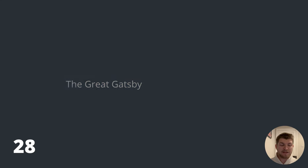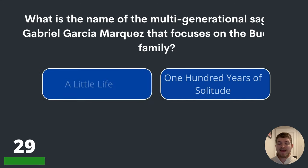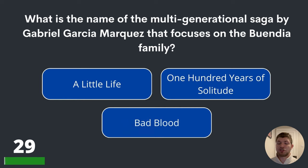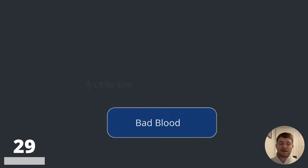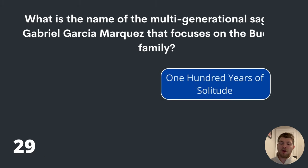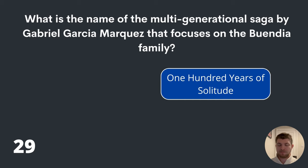Question twenty-nine. What is the name of the multi-generational saga by Gabriel Garcia Marquez that focuses on the Buendia family? A Little Life, One Hundred Years of Solitude or Bad Blood? The answer is One Hundred Years of Solitude.